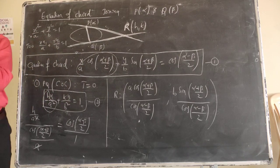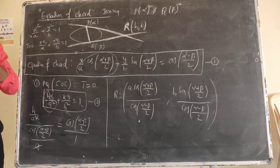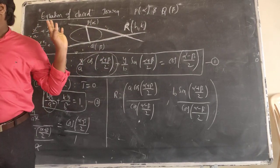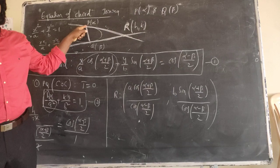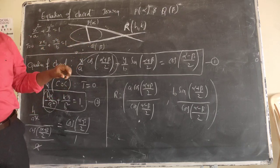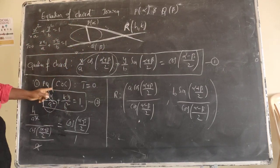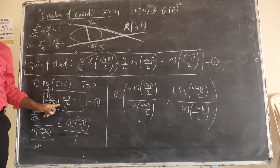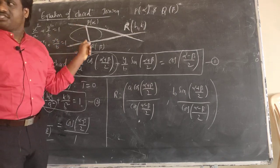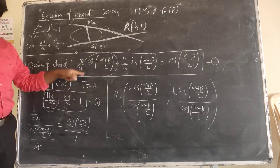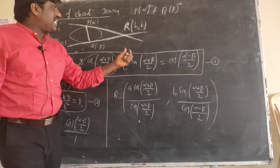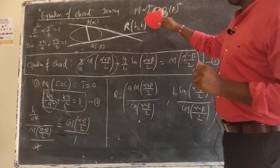Let me explain once more. If you have drawn tangents at two points of contact on the ellipse, the chord joining those contact points is the chord of contact. The external point where the tangents meet is (h, k), and using the chord of contact formula T = 0, equating with the parametric chord equation gives you the h and k values.